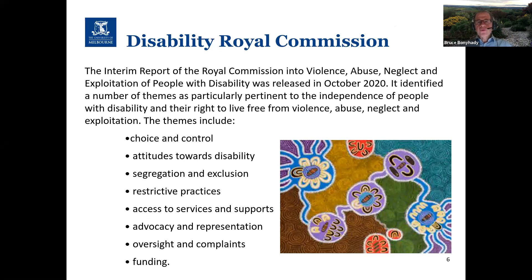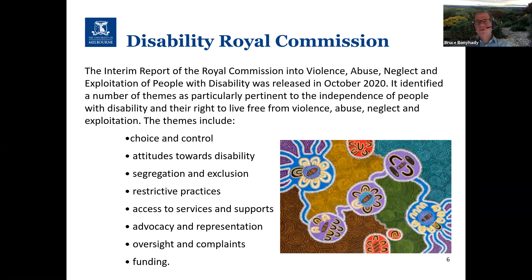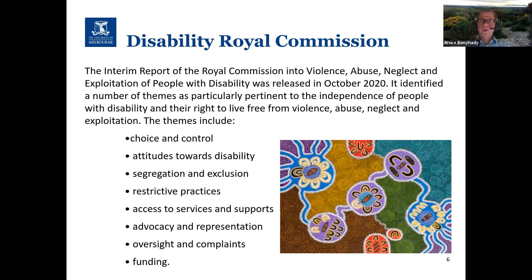We also have the Disability Royal Commission, which was called in response to the violence, abuse, neglect and exploitation that people with disabilities have experienced. Its interim report identifies key themes including choice and control, attitudes towards disability, segregation and exclusion, restrictive practices, access to services and supports, advocacy and representation, oversight and complaints, and funding. You can see strong similarities between those themes and the outcomes under the NDIS and the National Disability Strategy, showing how all of these things will come together to improve the lives of people with disability.